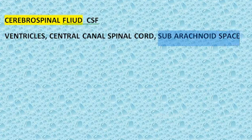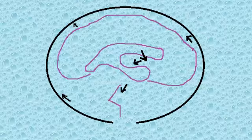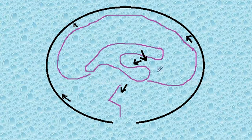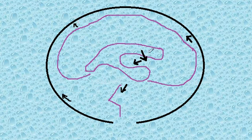I've drawn a diagram to show you this. The purple thing represents the brain, and the black thing represents the skull. Around the brain is the subarachnoid space where you can find the CSF. This is the ventricle, and down here it goes to the central canal of the spinal cord.